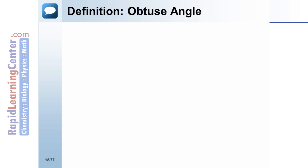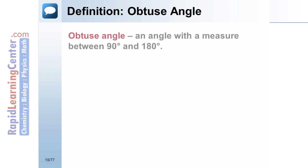Definition: Obtuse Angle. If the measure of an angle is between 90 and 180 degrees, it is called an obtuse angle. Angle ABC is an obtuse angle.